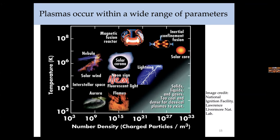On the plot you can see flames, the aurora, fluorescent lamps, solar wind, the nebula I showed, and the solar corona at about 5,000 Kelvin. Note an interesting feature: the temperature inside a magnetic fusion reactor is ten times larger than the temperature at the center of the sun — about 15 million Kelvin in the sun's core versus 150 to 200 million Kelvin in a fusion reactor. You can also see how much denser inertial confinement fusion is compared to magnetic fusion — magnetic fusion achieves fusion through temperature, inertial through compression.